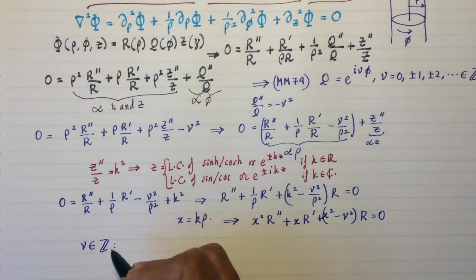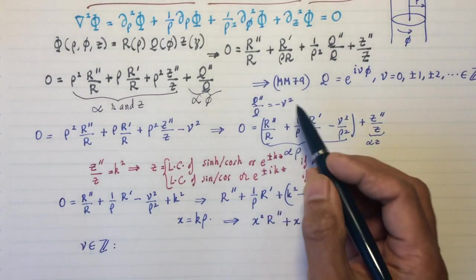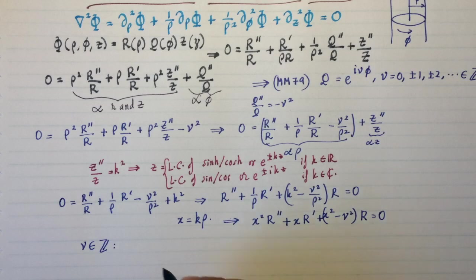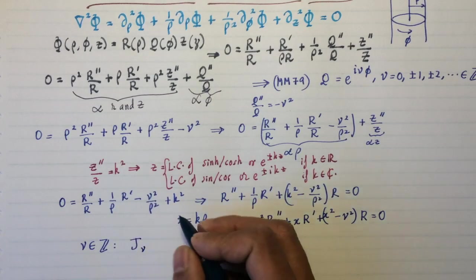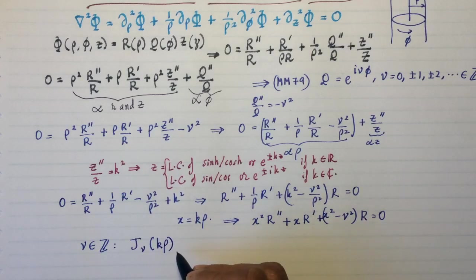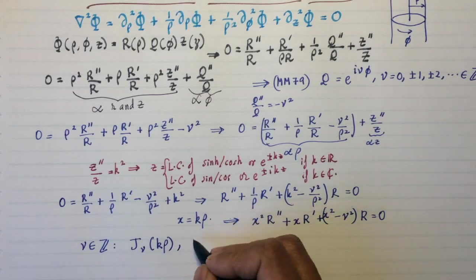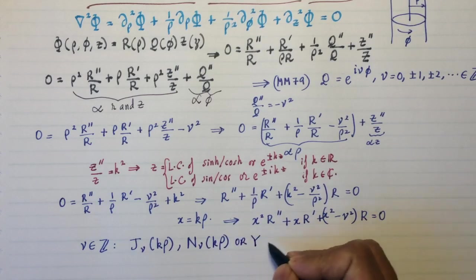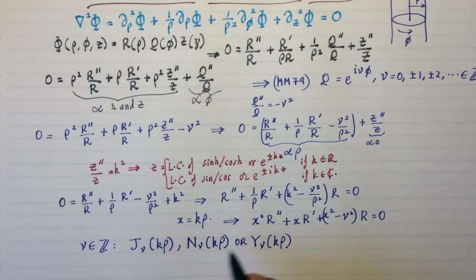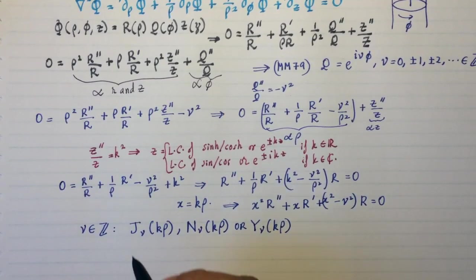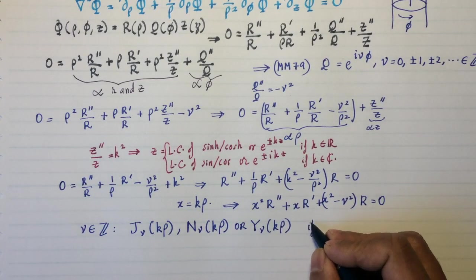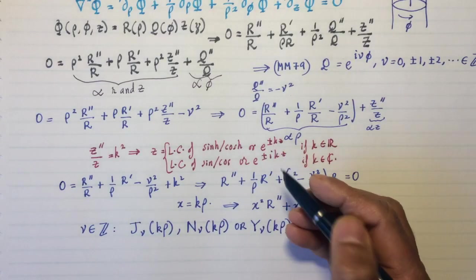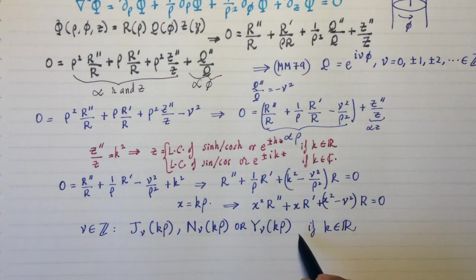So the solutions are going to be as follows. If ν belongs to the integers, as it often turns out to be the case, if you apply quantization conditions, then ν does belong to the integers, then you have to use the J_ν(kρ). It's always safe to use the linear combination of J_ν and the N_ν or Y_ν function. These are called Neumann functions or Weber functions. And I would always use this just to be on the safe side. And this is if k is real.